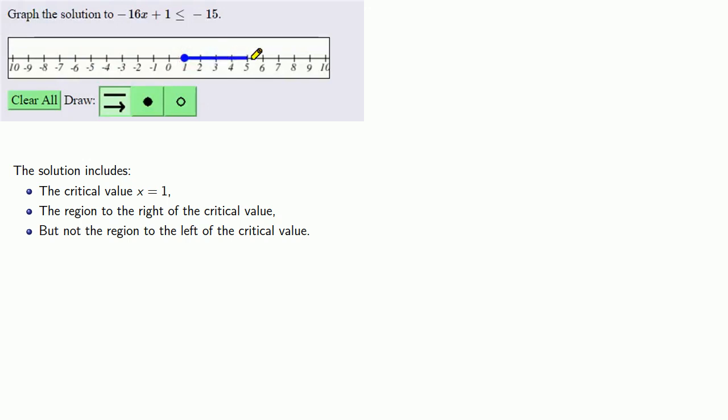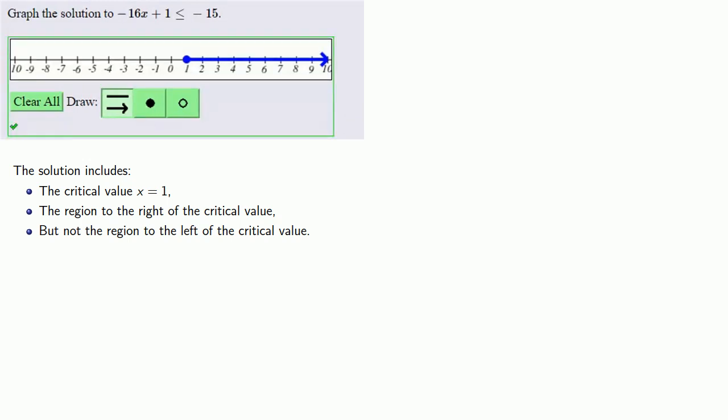Keep going until we get that right-pointing arrow. Now that we've graphed, we can submit our answer for the green checkmark that says full credit. Good.